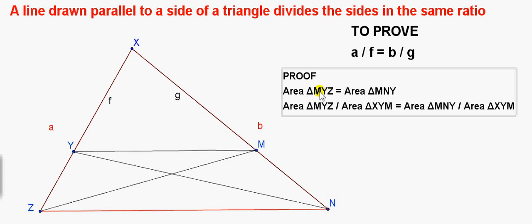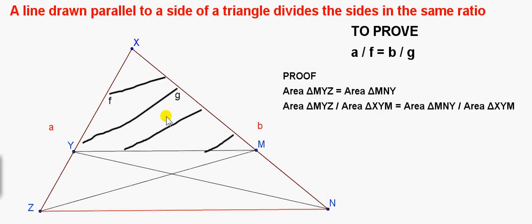The next thing we do is divide both sides of this equation by the area of triangle X, Y, M — that's the area of this triangle here. So we divide the area of triangle M, Y, Z by this triangle, and we do the same for the other triangle, M, N, Y. We are dividing both sides by the same thing.